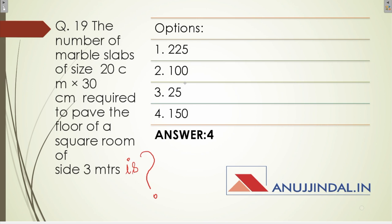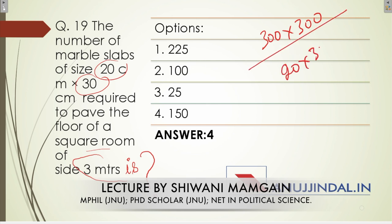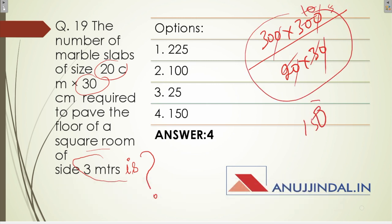Question nineteen asks: how many marble slabs of size 20 cm × 30 cm are required to pave the floor of a square room of 30 meters? The room is 300 cm × 300 cm. So the calculation is (300 × 300) / (20 × 30) = 90000 / 600 = 150. The correct answer is 150.